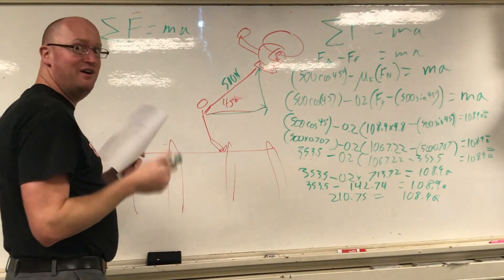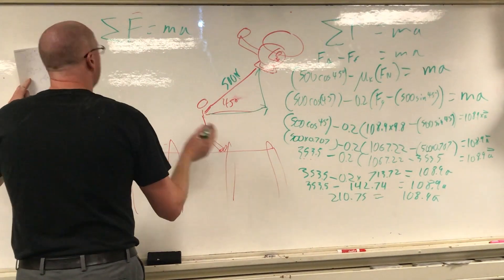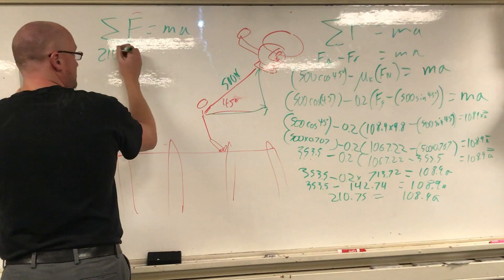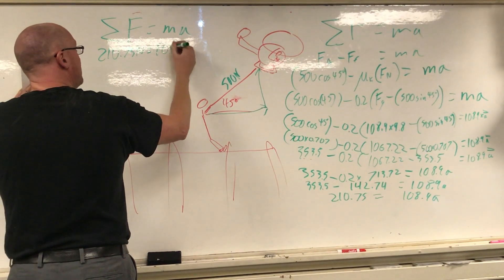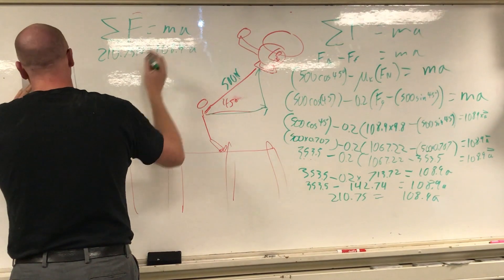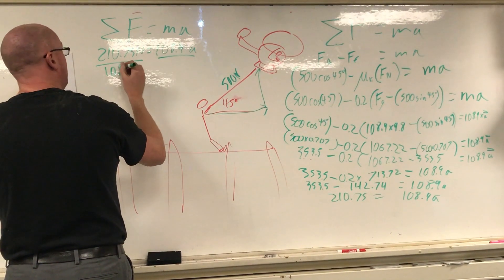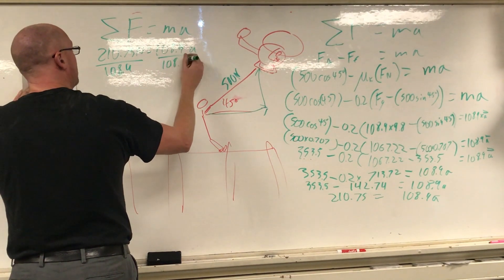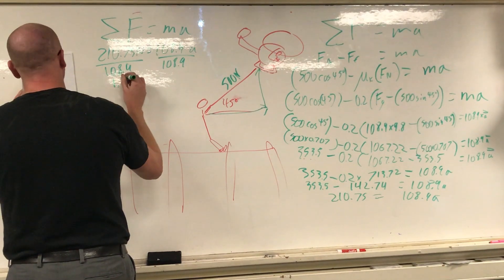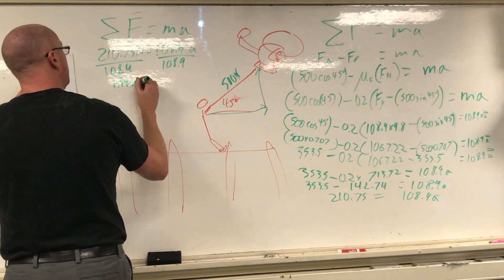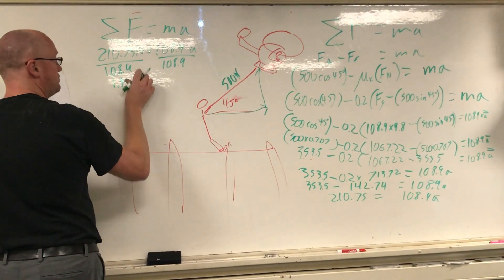So what did I find here? All that work was just to find this. So all that work was simply to give me the sum of the forces which are going to equal ma, but I got them now. Now let's solve this puppy. Okay, so 210.75 newtons is equal to my mass 108.9 times acceleration. Divide both sides by 108.9.